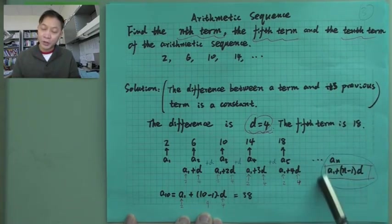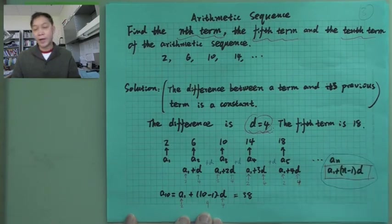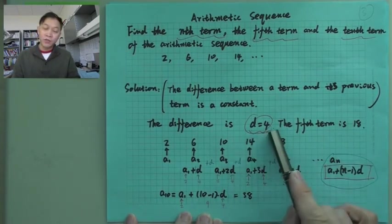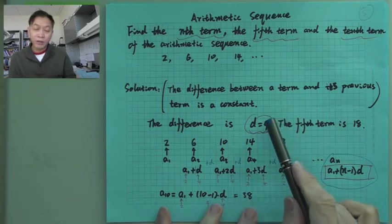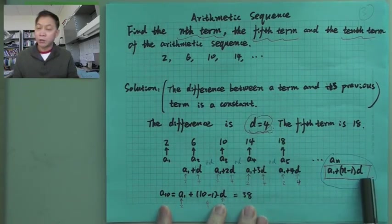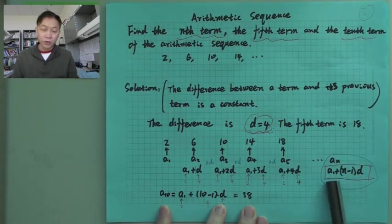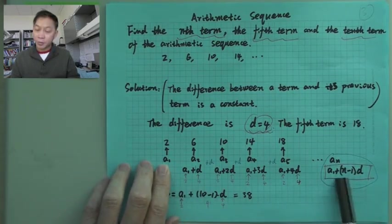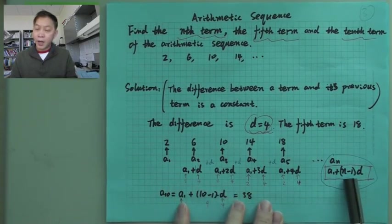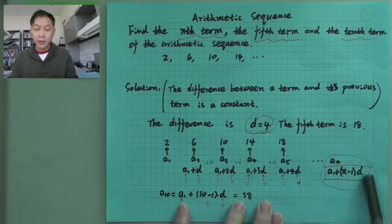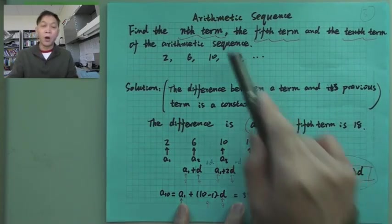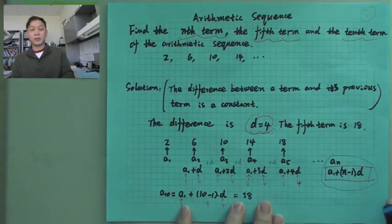This formula is a very general formula. It applies everywhere. Here D is 4. D might be 3, or might be even a negative number. But as long as we can find out the difference, then the nth term is always the initial term, the first term, plus (n minus 1)—the index, the sub-index here minus 1—times the difference. This is the general formula, and it is true for all arithmetic sequences.